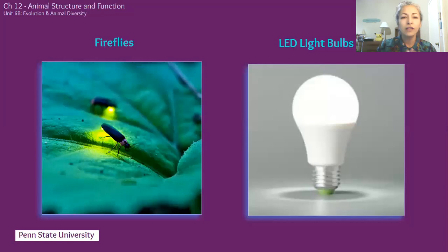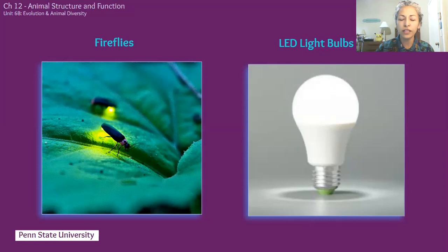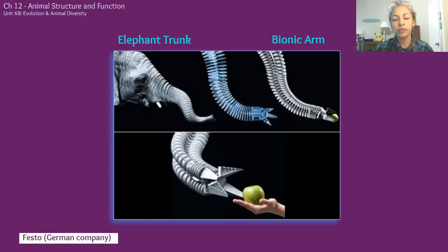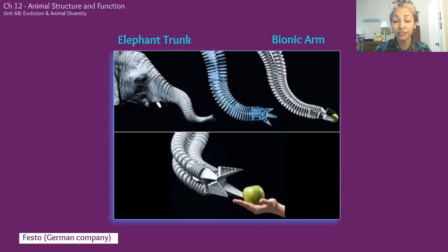How about fireflies? Their lanterns have asymmetrical pyramids all along the surface, and researchers at Penn State are realizing that those little bumps extract much more light. They're using this to change LED light bulbs — changing the surface to have those asymmetrical pyramids just like the firefly increases light output up to 90% extraction. How about biomimicry from the elephant trunk? An elephant can retract, expand, extend, and bend its trunk in any way. The German company Festo is working on a bionic robotic arm patterned right after an elephant trunk for maximum flexibility and strength.